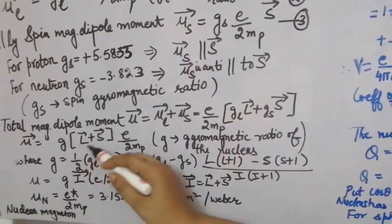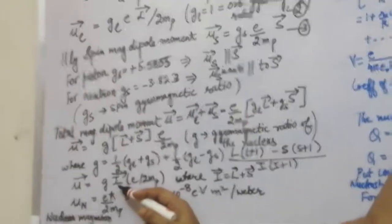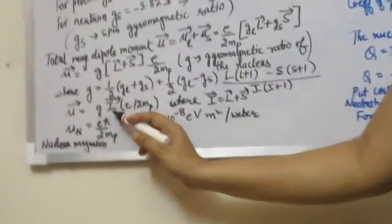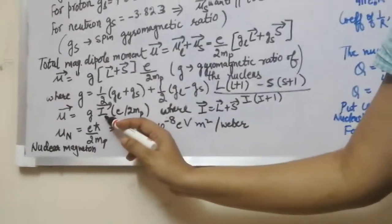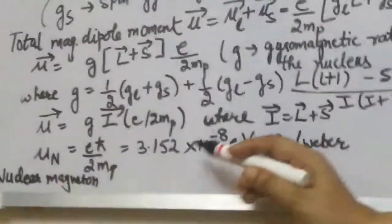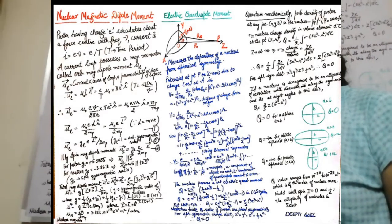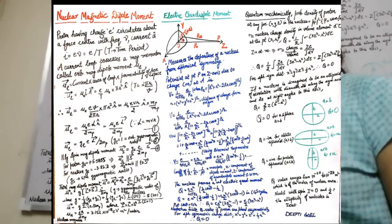Substituting L + S with I, we get the total magnetic dipole moment μ = g · I_vec · e/(2m_p). Substituting I = ½ℏ for the proton, we get μ_N = eℏ/(2m_p), and the value comes out to be 3.152 × 10⁻⁸ eV·m²·Wb. This μ_N is called the nuclear magneton.